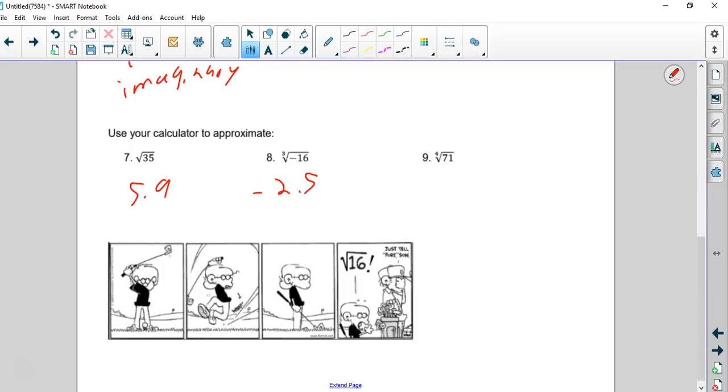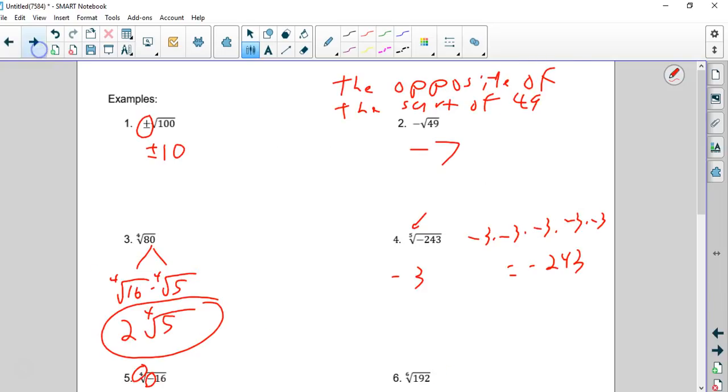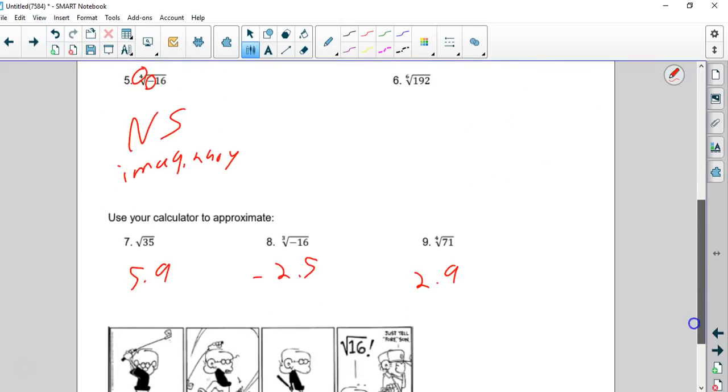Fourth root of 71. You hit the 4 first. Tell it what index. Then you hit math key. You go down to 5. Enter. 71. Enter. That's 2.9. Which, once again, that makes sense. If you go back to your chart, it is right underneath 81. Pretty close. And that's why it's 2.9.